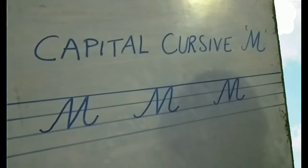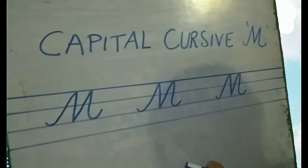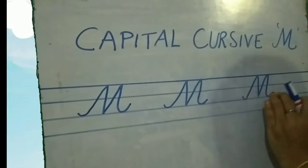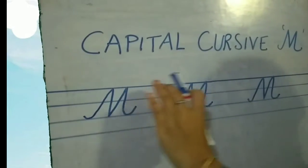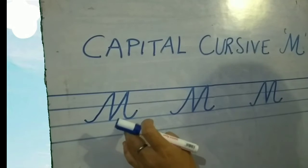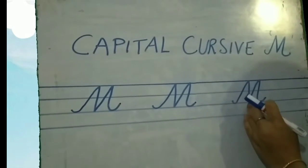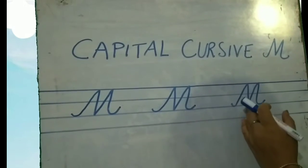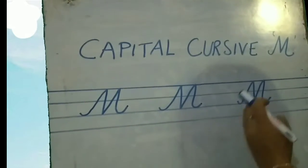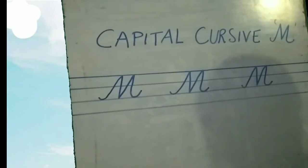Children, now at home what you have to do — you have to write the same as it is. Here I wrote three capital cursive M in the first line. You have to write one full page.